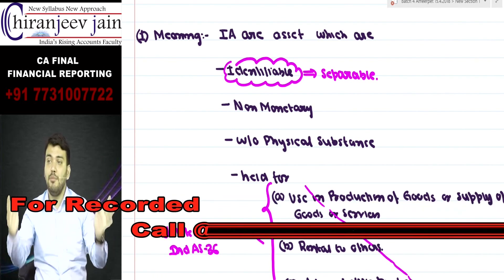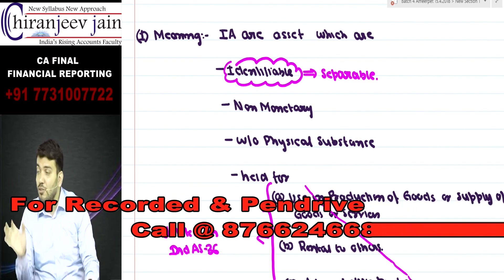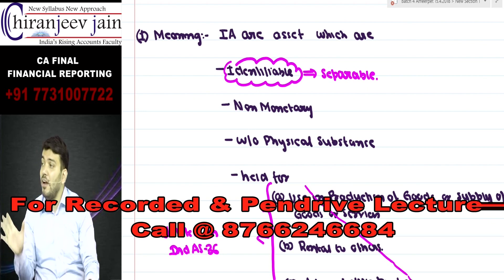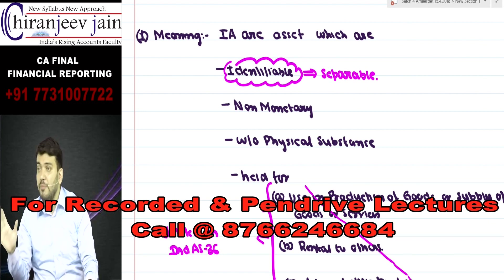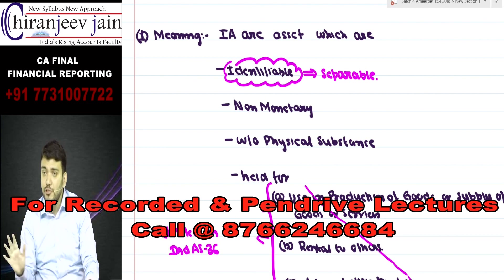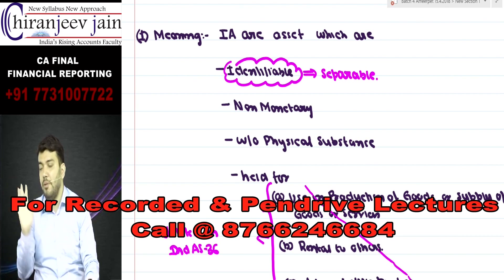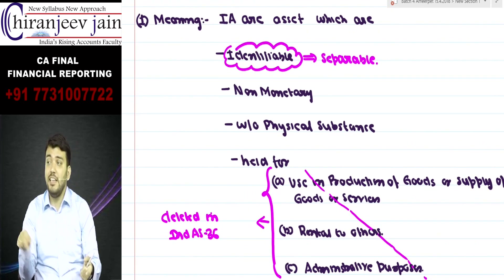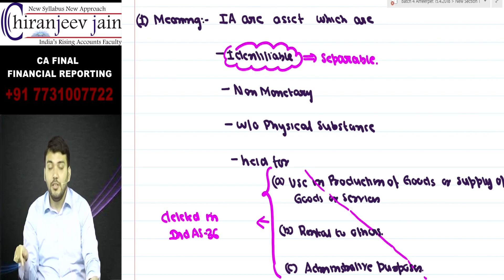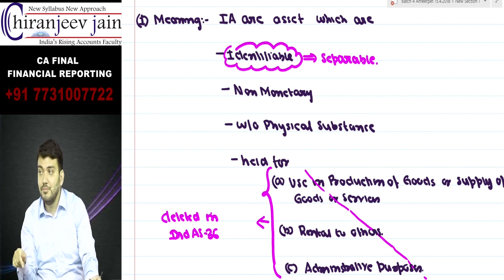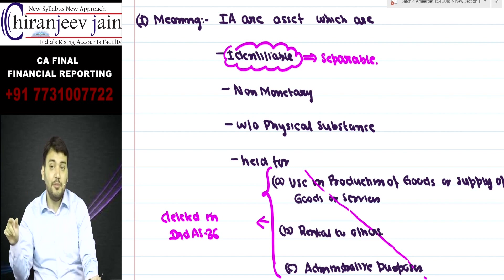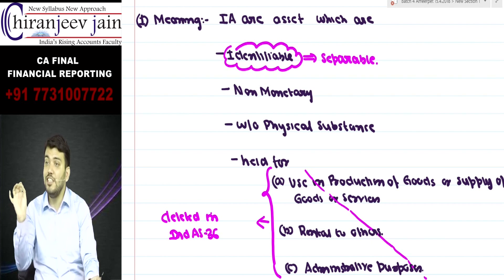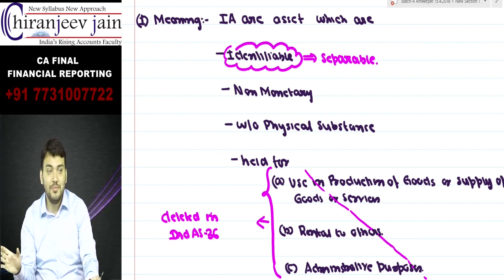So every identifiable asset needs to be recorded. Identifiable means separable - whether it can be given on rent, sold, transferred, or exchanged to a third party. What is the meaning of non-monetary? AS11 has defined monetary items. What are monetary items? Assets and liabilities which have a fixed or determinable value.